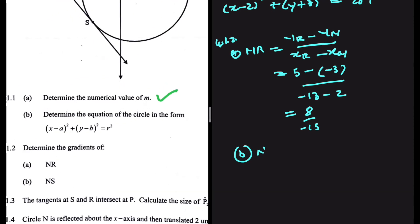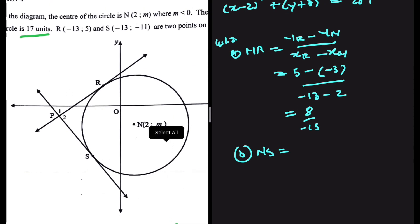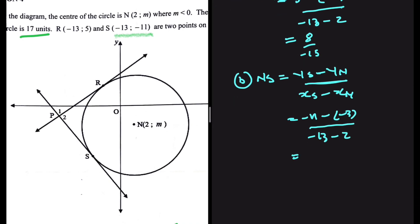Part b asks for the gradient of NS. We have the coordinates of S as well. Gradient NS equals (y_S minus y_N) divided by (x_S minus x_N). y_S is minus 11, y_N is minus 3, so the numerator is minus 8. x_S is minus 13, x_N is 2, so the denominator is minus 15. This gives gradient NS equals 8 divided by 15.